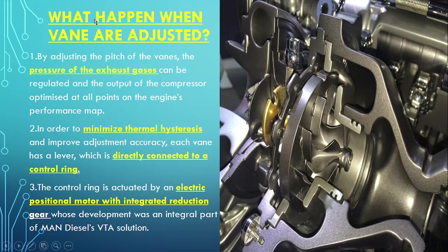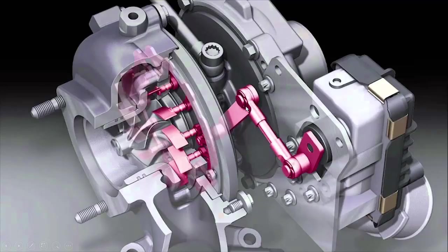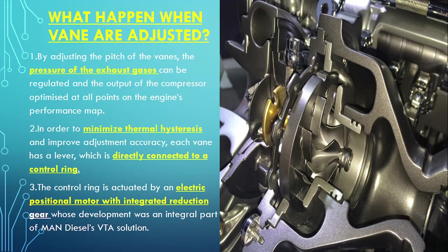Now, what happens when the vanes are adjusted? Before we see that question's answer, look at the diagram: this is the control ring on one end, these are the vanes, this is the turbine, and on the other end is the compressor. This control ring is attached to a linkage connection leading to the control box. The control box consists of a servo motor which receives a signal and based on that moves the rod up and down, and based on that the vane area changes.